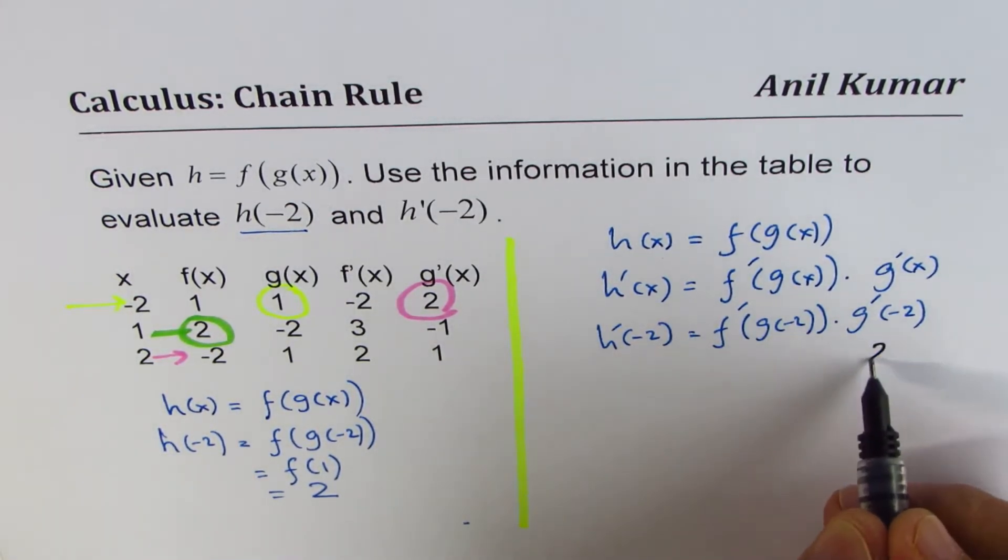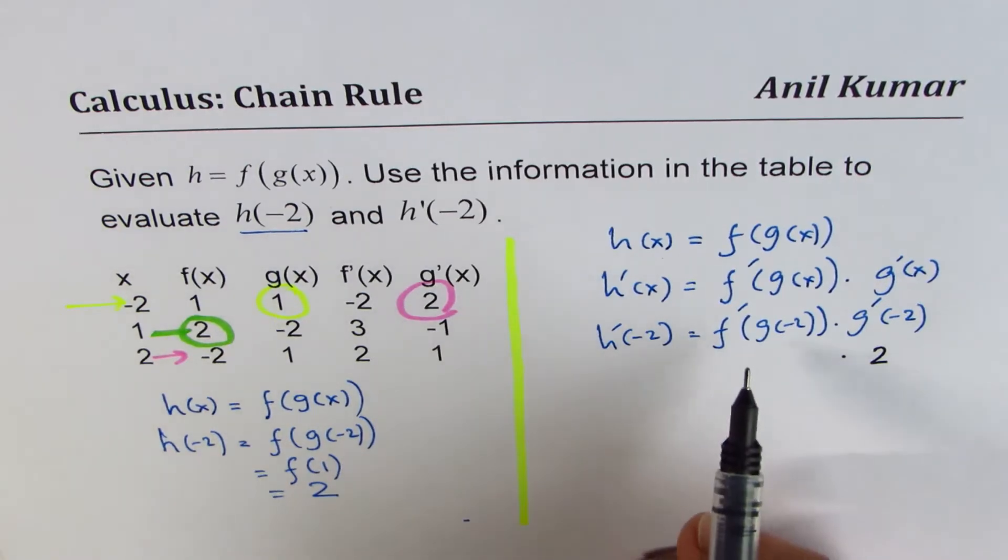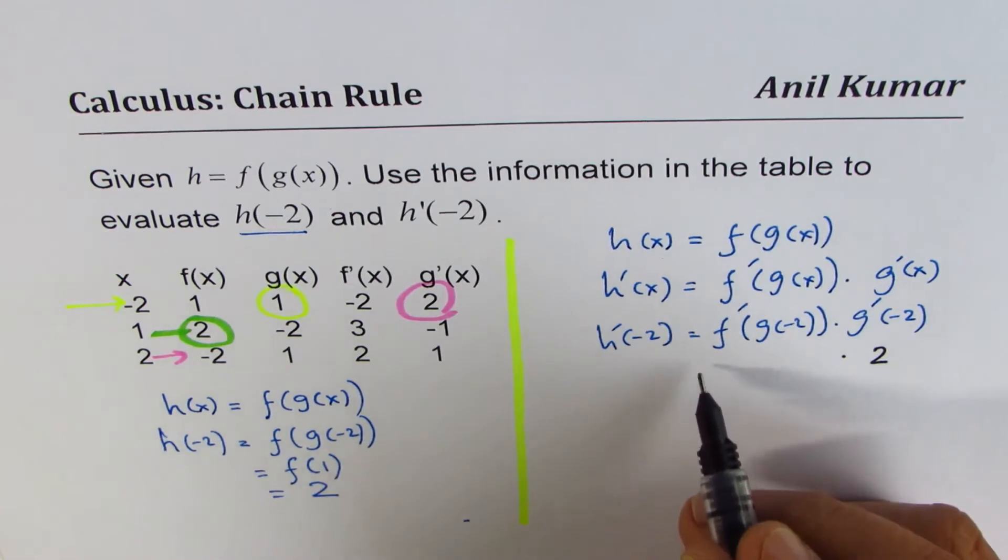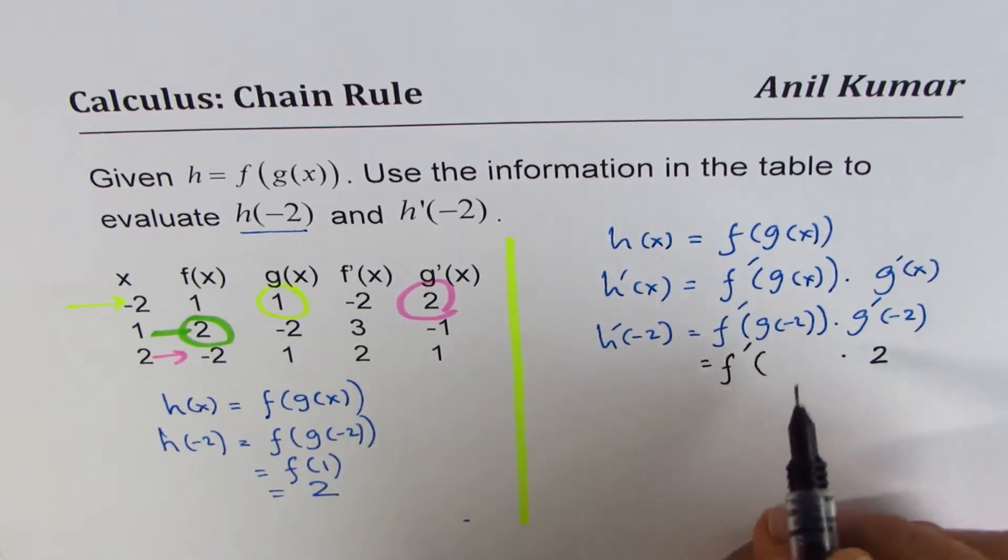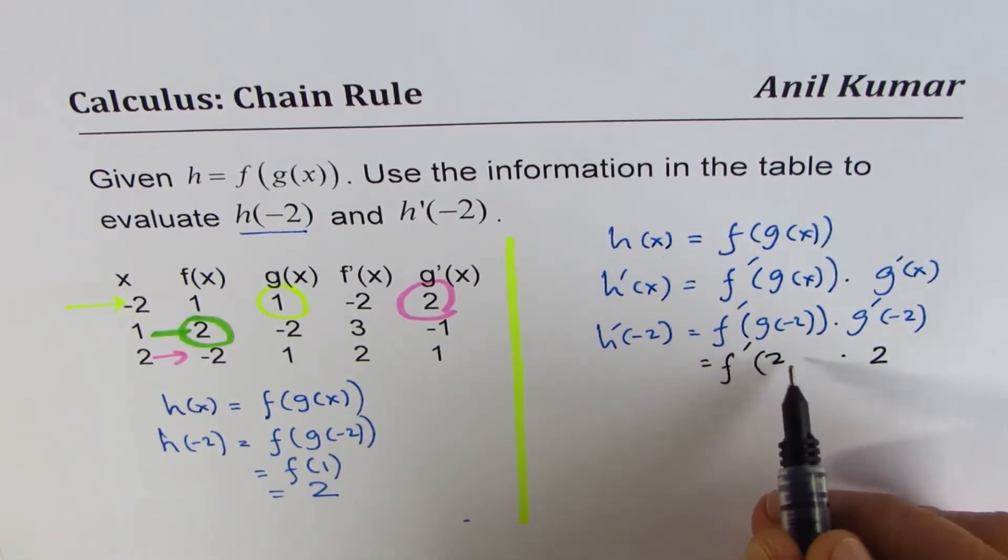Let's substitute this value by 2. Now, what is the value of the derivative? We can write this as f prime of, so this becomes 2.